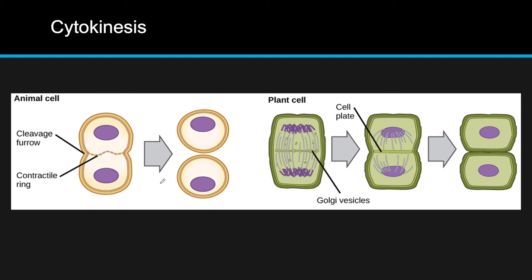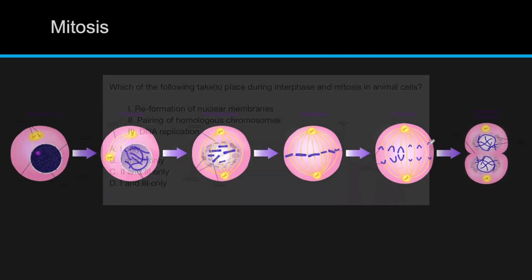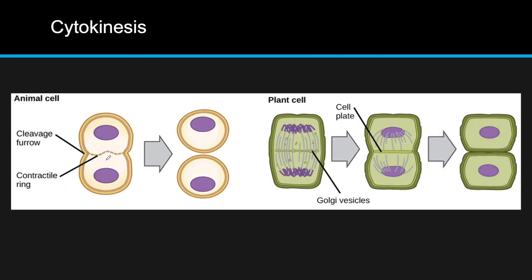It's important to note that the actual cell division is not part of mitosis — it's a separate process called cytokinesis. In animal cells, the cell membrane pulls inward to create a cleavage furrow. Contractile proteins known as myosin and actin cause the cell membrane to pull inward toward the middle until it divides. Plasma membranes can easily divide and reconnect, allowing this process to happen almost seamlessly.